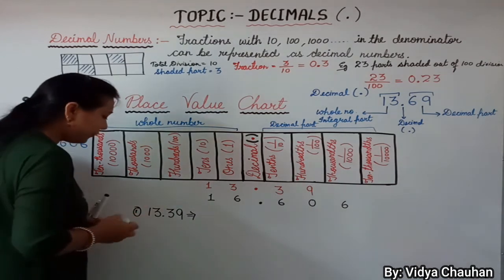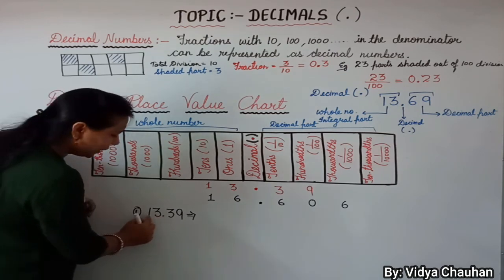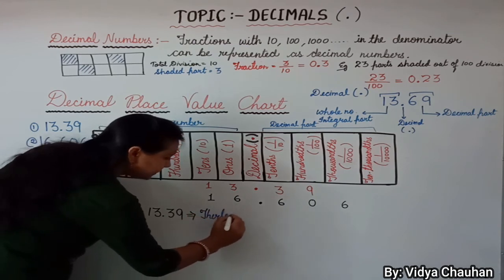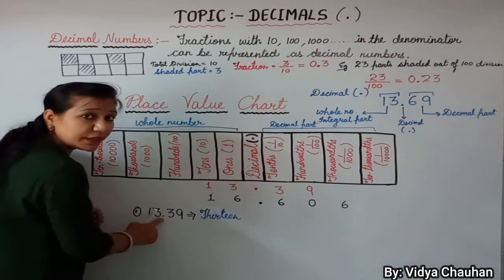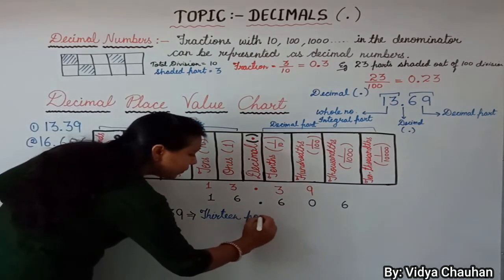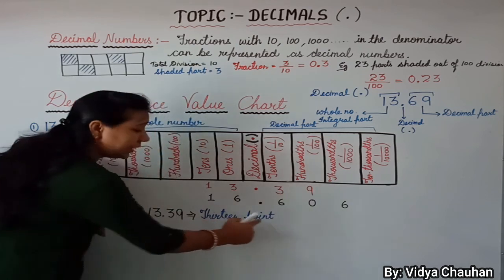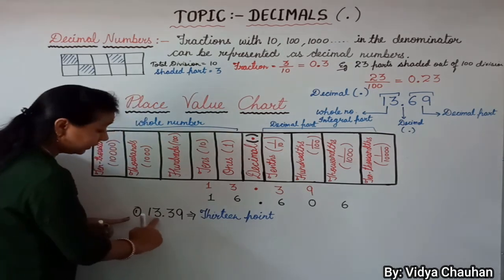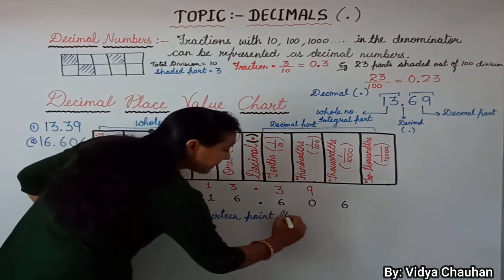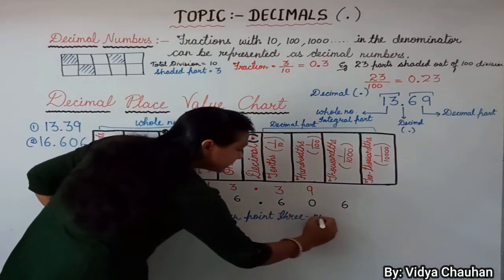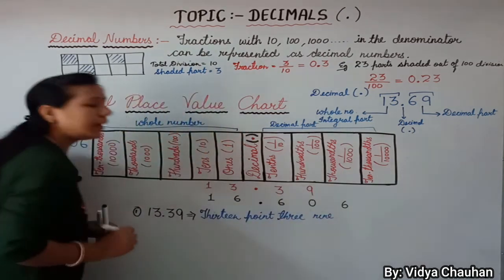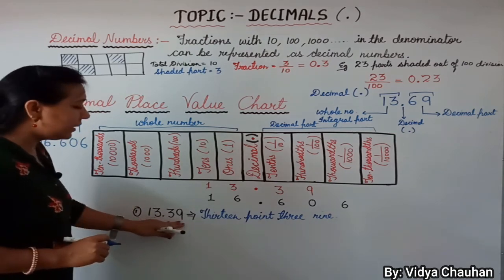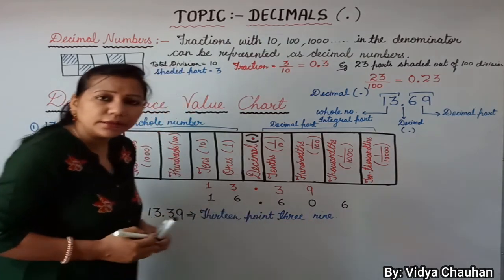The first method: read the digits before the decimal together as a number — that is thirteen — then say 'point,' then read each digit after the decimal individually. So 13.39 is read as 'thirteen point three nine.'